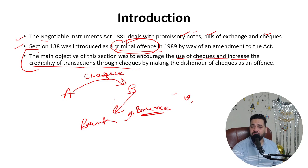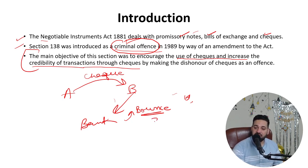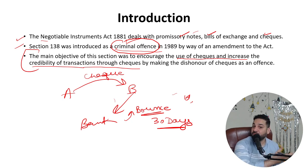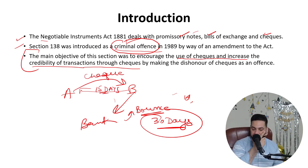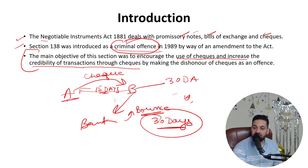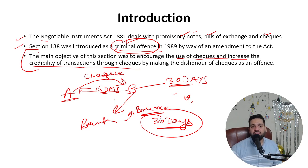So what is the process? A gave a check to B; B went to the bank to encash it; the check bounced due to insufficient balance. Within 30 days of getting this information from the bank, B needs to send a 15-day notice to A demanding payment. If A does not return the money within those 15 days, B then has another 30 days to file a case against A in court. Section 138 would then be applicable: two years of imprisonment and a fine up to twice the amount of the check, or both.